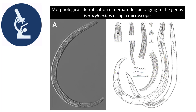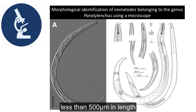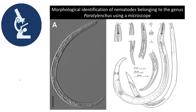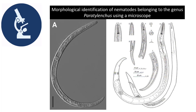These characters include size, whereby Paratelencus is quite small compared to other co-occurring plant parasitic nematodes. Another character is the typical general shape. They can also be characterized by varying lengths of the stylet depending on the species. Other characteristics include a continuous labial region and a usually weak labial framework.